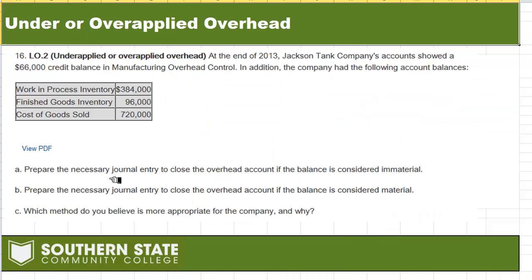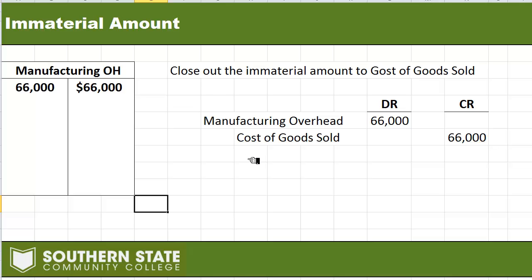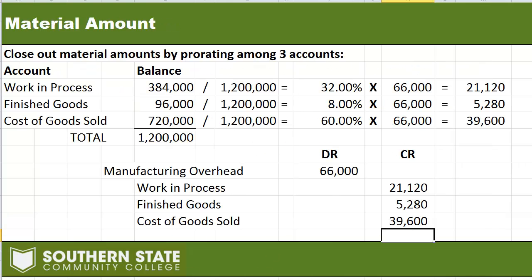Part C of the problem asks which method is more appropriate and why. Would you consider it immaterial and close it to cost of goods sold, or consider it material and prorate it to three accounts? In this case, it's probably better to treat it as material, because $66,000 represents about 5.5% of the total of the three accounts. That's probably a little too much to just plug into cost of goods sold — it may give us a distorted picture of COGS. The better procedure is to treat it as material and divide it out among the three accounts.